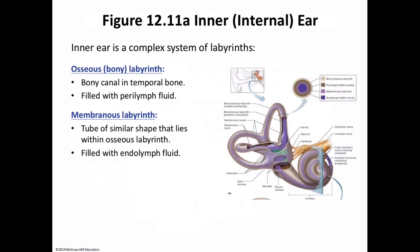The inner ear is made up of a system of labyrinths. The two types are the bony labyrinth (osseous labyrinth) — a cavity within the temporal bone — and the membranous labyrinth, a tube of similar shape lying within the bony labyrinth. Between the bony and membranous labyrinth is a fluid called perilymph, created by cells in the wall of the bony labyrinth. Inside the membranous labyrinth is a slightly different fluid called endolymph. The perilymph is similar to cerebrospinal fluid, while the endolymph is chemically similar to potassium-rich intracellular fluid. These fluids conduct sound vibrations and respond to changes in body position and acceleration.